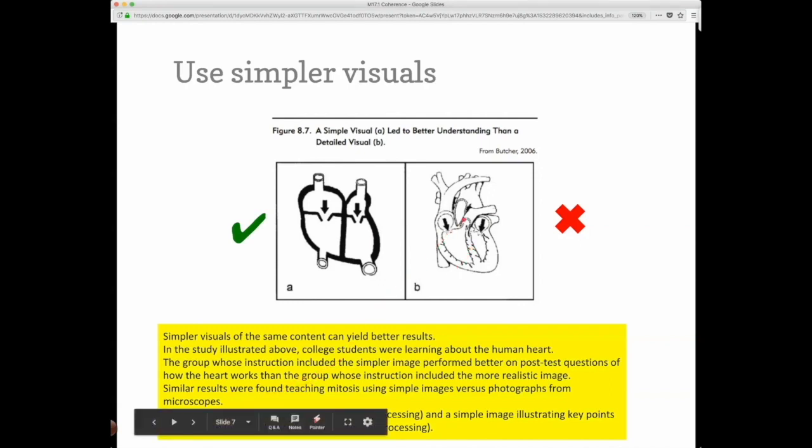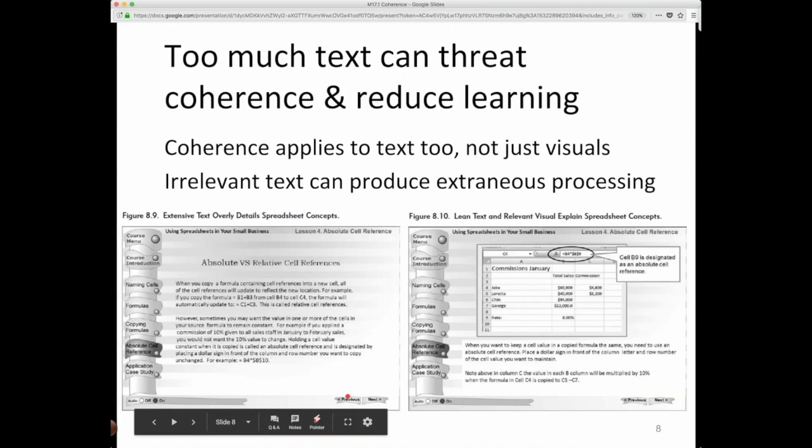Realism can essentially distract learners, overwhelm them, have them processing some of the irrelevant details of, for example, the curviness of all these veins and arteries, whereas the simplicity of this one really goes to the four chamber notion and the double loop notion. Similar results have been found in other areas like this.